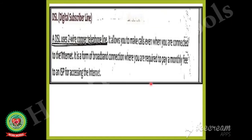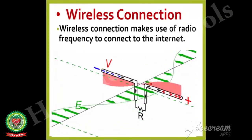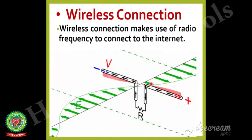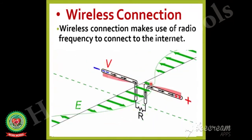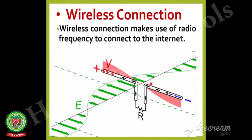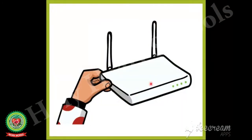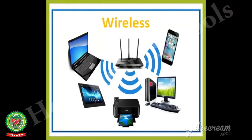The next type of internet connection is wireless connection. Wireless connection makes use of radio frequency to connect to the internet and offers great speed. It can be used from any location that comes under the network coverage area. It requires a Wi-Fi modem or mobile phone to be connected to your computer.